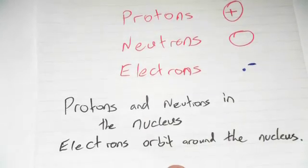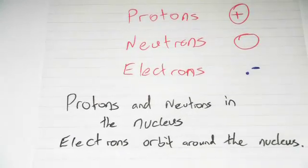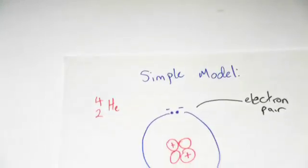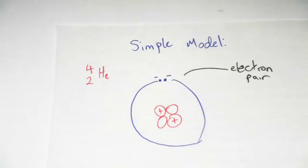So down here, protons and neutrons in the nucleus, electrons orbit around the nucleus. So in our simple model of the atom, this is helium, helium-4, so classic what you fill balloons with.